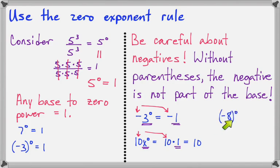On this example, the base is negative 8, and anything to the 0 power is 1. And on this example, the base is 10x, and anything to the 0 power is 1.